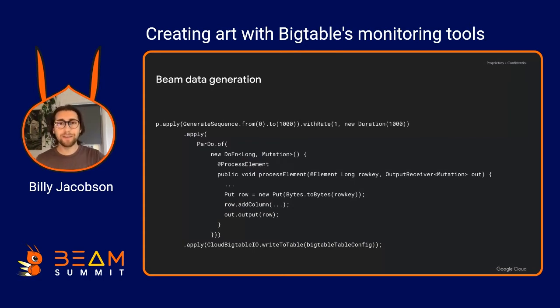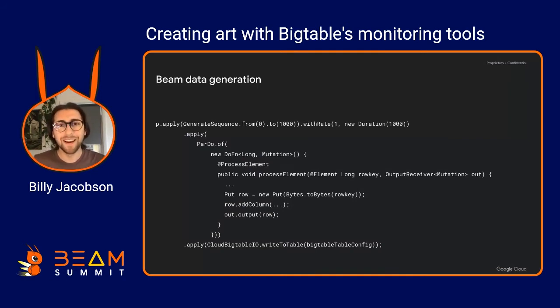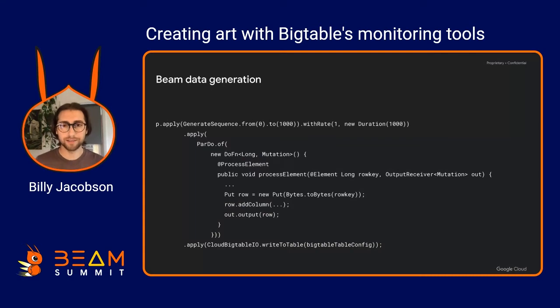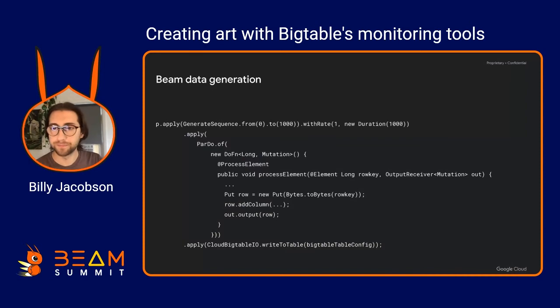I also found that I was generating data a little too quickly, so I added rate limiting — with a rate of one, every second I would send a pulse. I played with this to make sure it worked correctly.